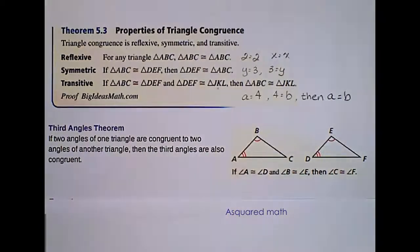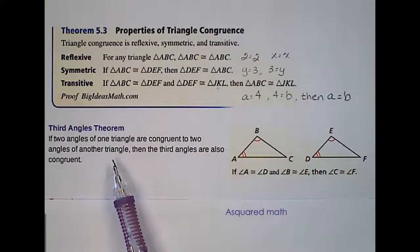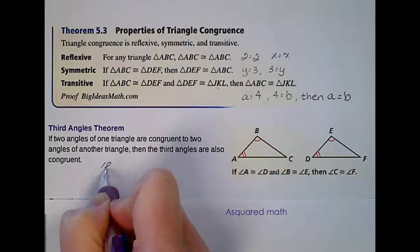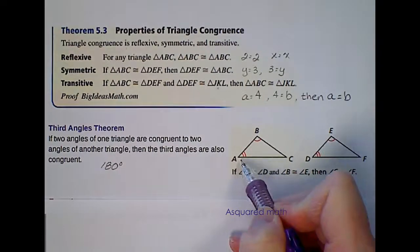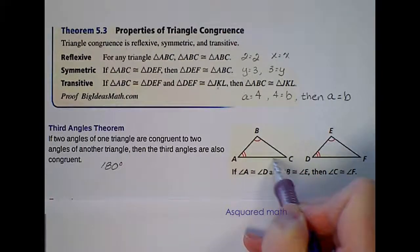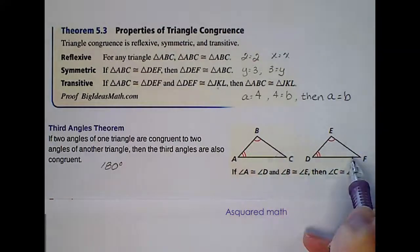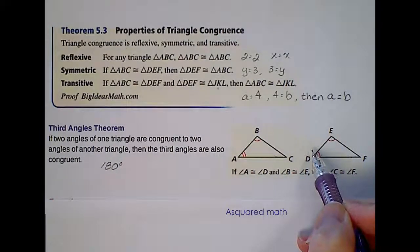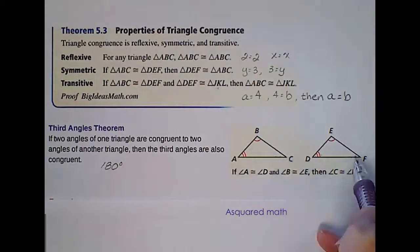The last theorem we're going to get into for this section is called the third angles theorem. And that says if two angles of one triangle are congruent to two angles of another triangle, then the third angles are also congruent. If you relate this back to the triangle sum theorem that says the sum of the interior angles of a triangle are 180 degrees, then if we know 180 minus angle A minus angle B gives us this third angle measure, this has to be the same as angle F over here because B and E are the same measure, A and D are the same measure, and if the interior angles are all 180 degrees, then angle C has to be congruent to angle F.